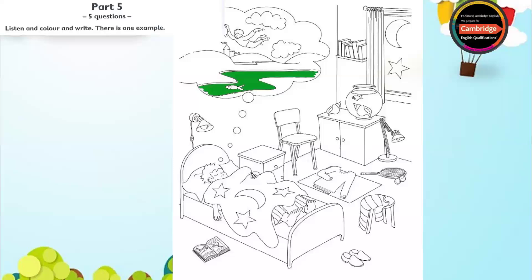4. Can I colour the lamp now? Yes. Colour the one that's above the boy's head. Colour it purple. OK. I like that lamp. I've got one like that. Have you? Yes.